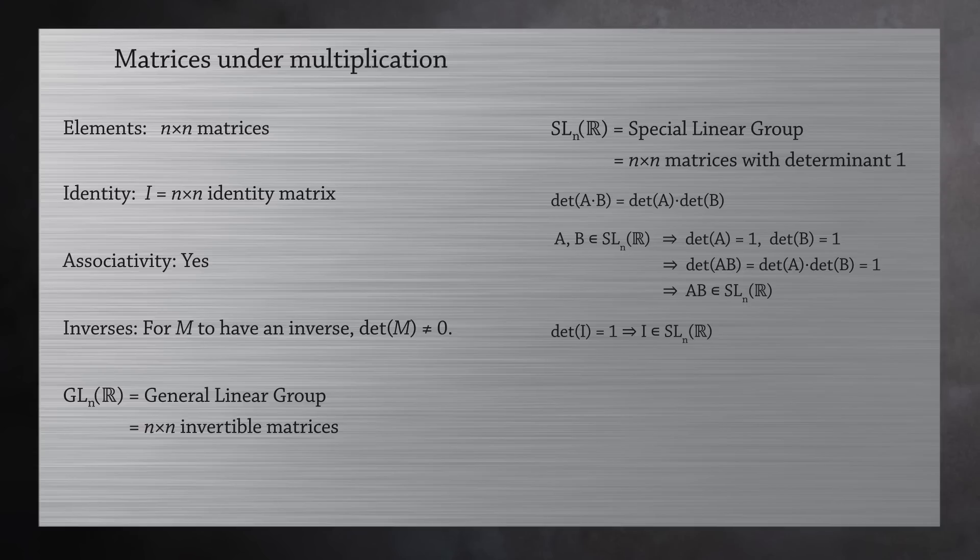Once again, we look at the determinants. A times A inverse is the identity matrix I. So the determinant of A times the determinant of A inverse is the determinant of the identity. This reduces to 1 times the determinant of A inverse equals 1. Simplifying gives us the determinant of A inverse equals 1. So the inverse is in the group.